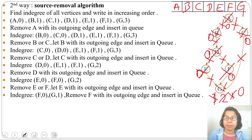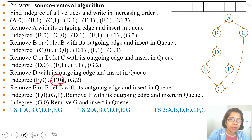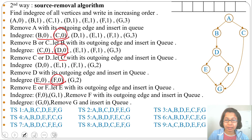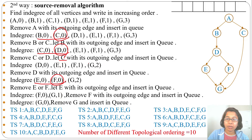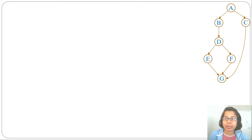In this sequence of removing sources, we get one topological ordering: A, B, C, D, E, F, G. However, multiple topological orderings are possible. At several steps we had choices: E and F both had indegree 0, C and D both were sources, and B and C both had indegree 0. If we had chosen differently at each point, we would get a different ordering. There are 10 topological orderings in total, and checking every sequence manually would be time-consuming, so let's discuss an alternative approach.